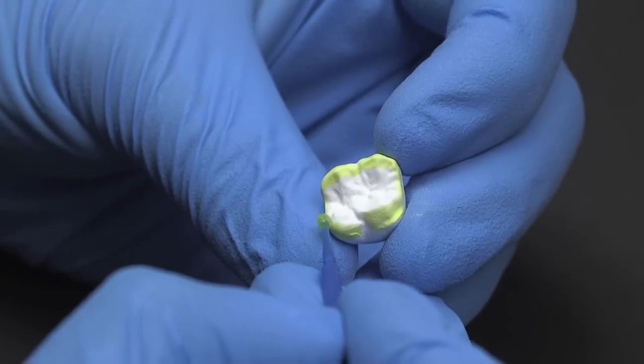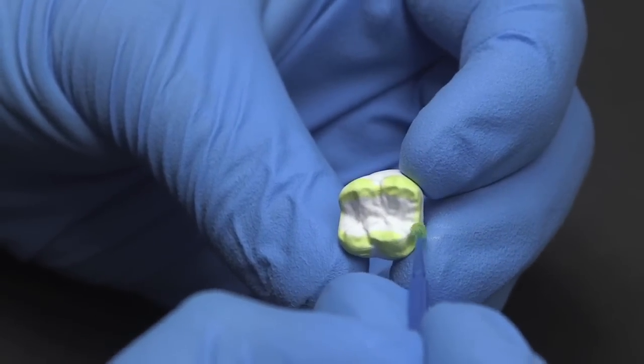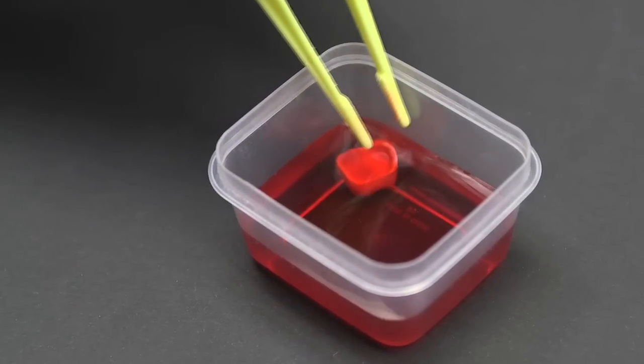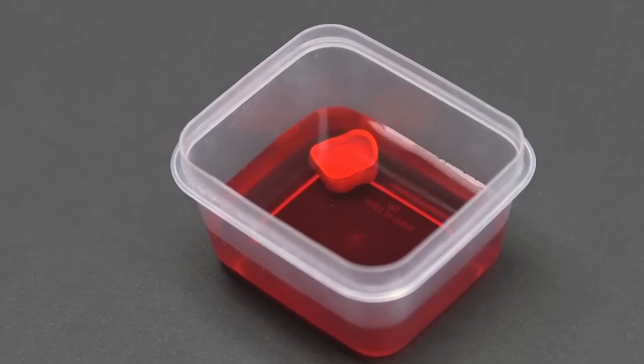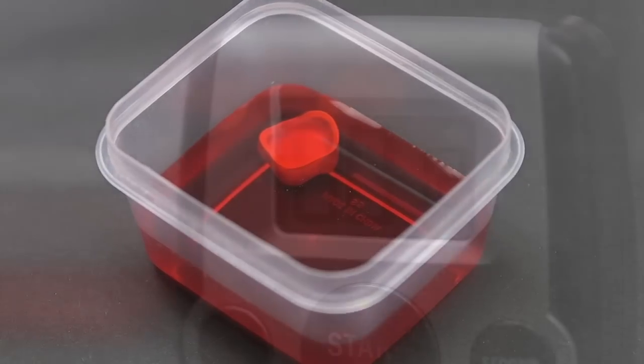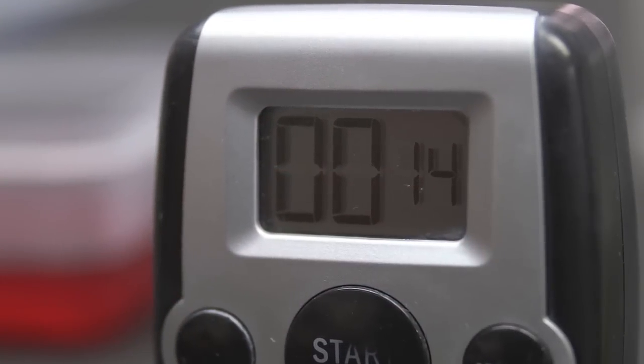Once you have painted the restoration, it is time to dip the crown in the shading liquid. Be sure to use tweezers to prevent the liquid from splashing. When the crown is completely submerged in the shading liquid, we recommend it remain undisturbed for 15 seconds.